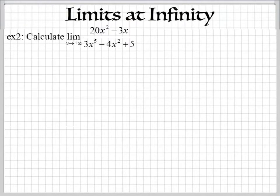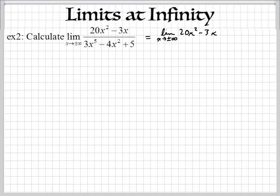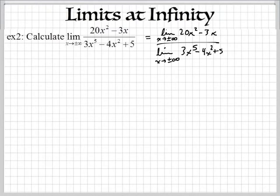Now let's take a look at it algebraically. Here's a nasty looking one. You can still use the basic limit laws, and there's one called the quotient law. All that means is you can rewrite this so that you can say this equals the limit as x approaches positive and negative infinity of 20x² minus 3x, divided by the limit as x approaches positive and negative infinity of the denominator, which is 3x⁵ minus 4x² plus 5. So we can find the limit of the top and the limit of the bottom, then divide those to get our answer.